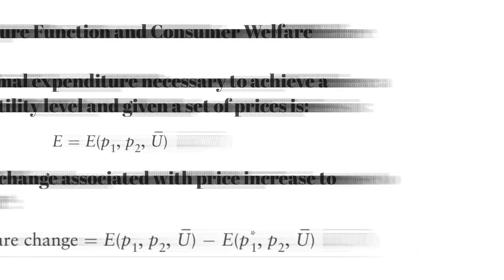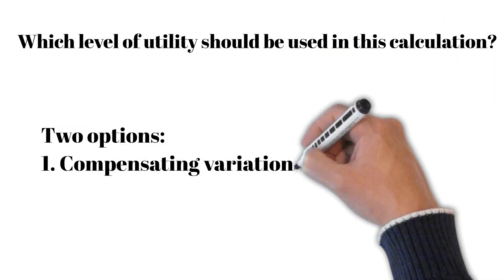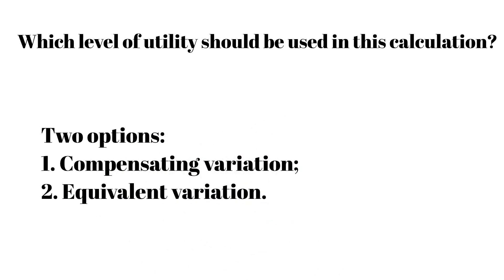There are two options to choose the utility level that should be held constant. When we hold the initial utility constant, we are talking about the compensating variation. When we hold the new utility constant, we are using the equivalent variation.